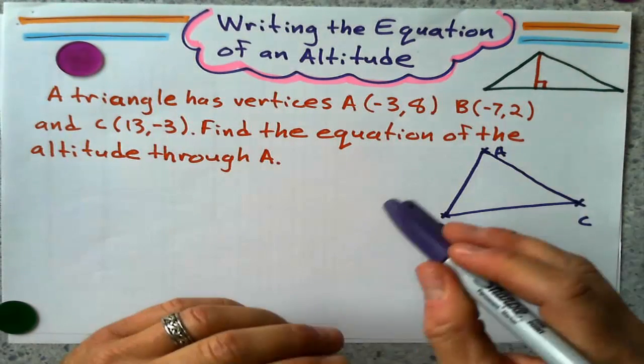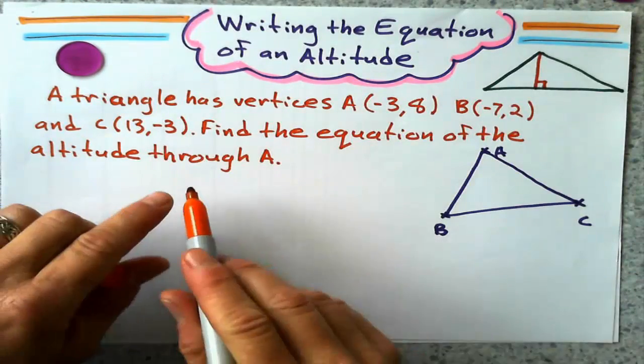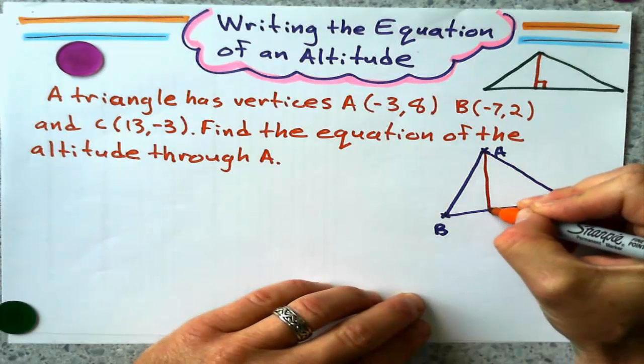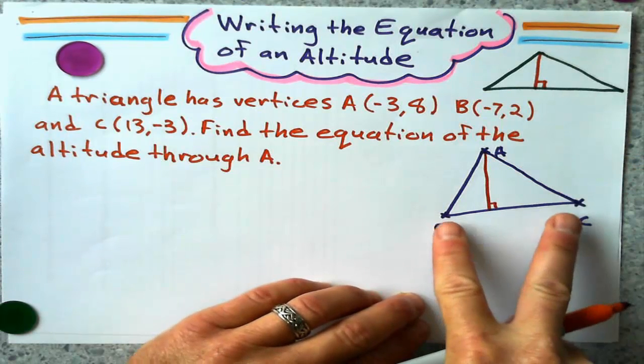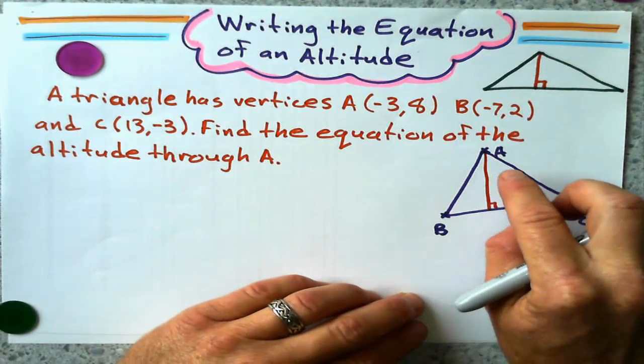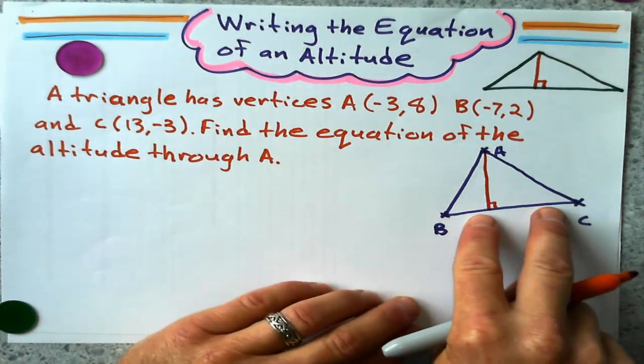So I drew a rough sketch of what that triangle would look like. I didn't even put it on a plane or anything. But my altitude is going to be coming from A, perpendicular to BC. And it probably won't hit it at the midpoint. It may or may not. But the only thing I know is that that altitude will be perpendicular to segment BC.